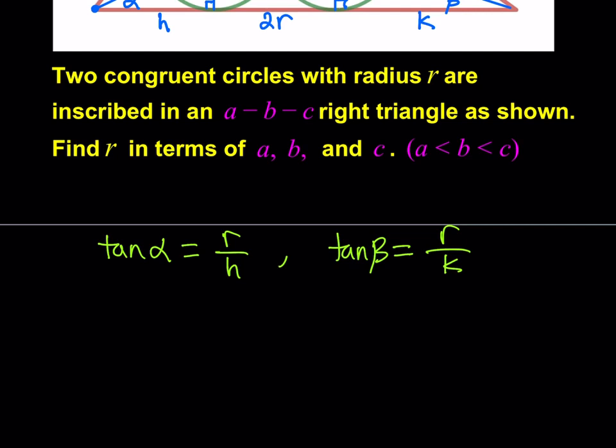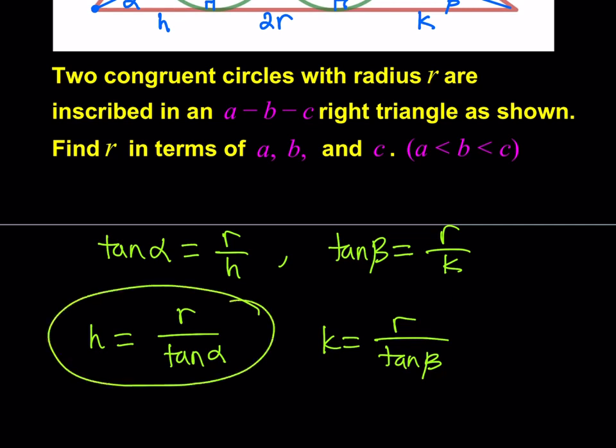Now, from here, I should be getting something helpful, and I'd like to isolate the h. So, h is going to equal r over tangent alpha. And k is going to equal r over tangent beta. Now, we're going to use these equations, but first, we have to do more work.